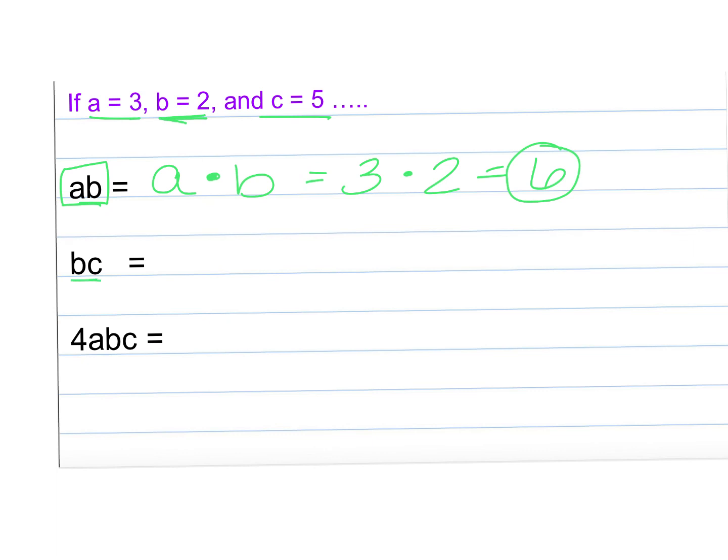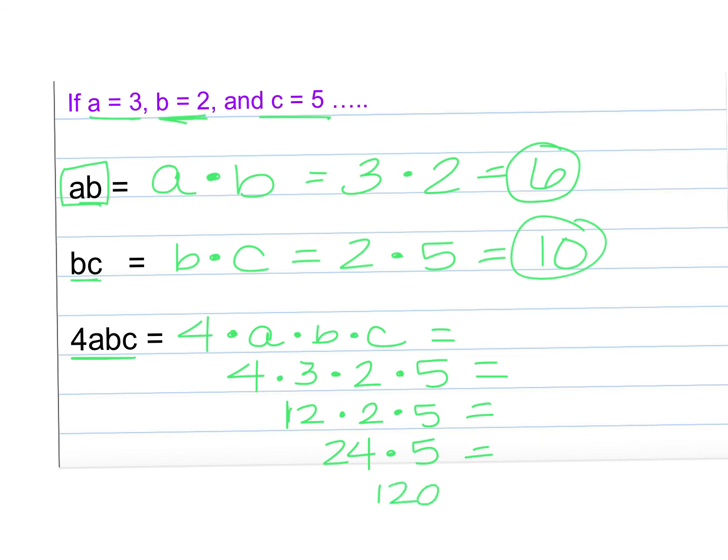And then we have BC, which is the same as B times C. B is 2, C is 5, 2 times 5 is 10. And then we have 4ABC, which is the same as 4 times A times B times C. And because it's all multiplication, I just solve it left to right. So we have 4 times 3 times 2 times 5. And again, I'm rewriting it so I know exactly what I'm doing. 4 times 3 is 12 times 2 times 5. And then 12 times 2 is 24 times 5. And then 24 times 5 is 120.